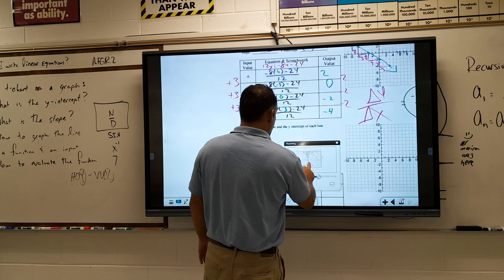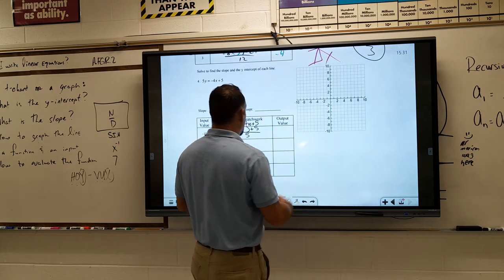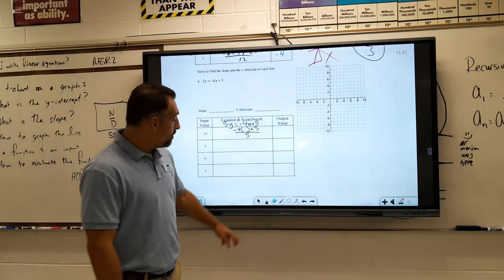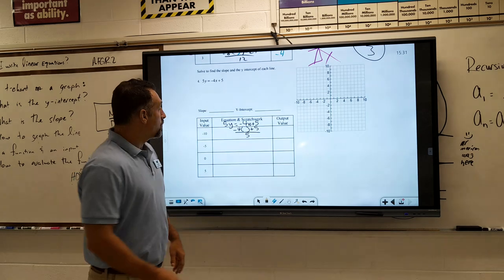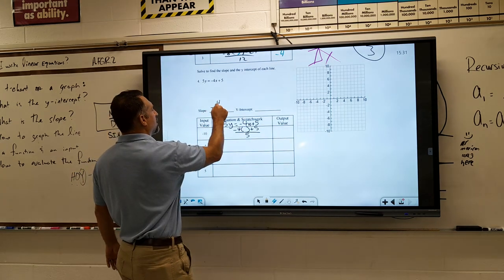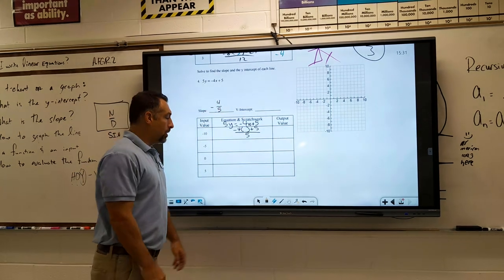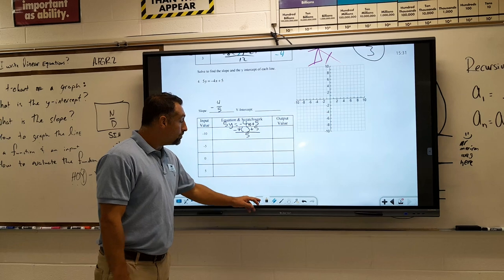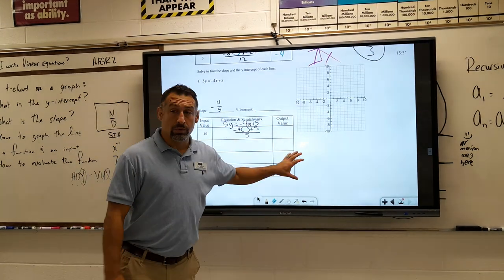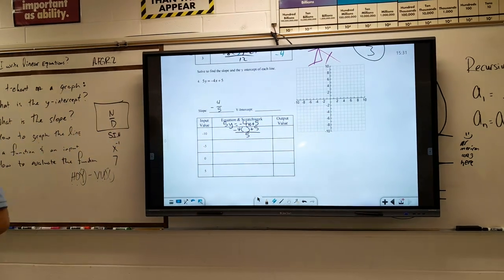I had the students work out this final problem. They had to bring it to me and show me, then I would give them their worksheet. The slope here was negative—I think it was -4/5, I'm going kind of from memory. They had to graph it and do this one by themselves. After that, they got their worksheet.